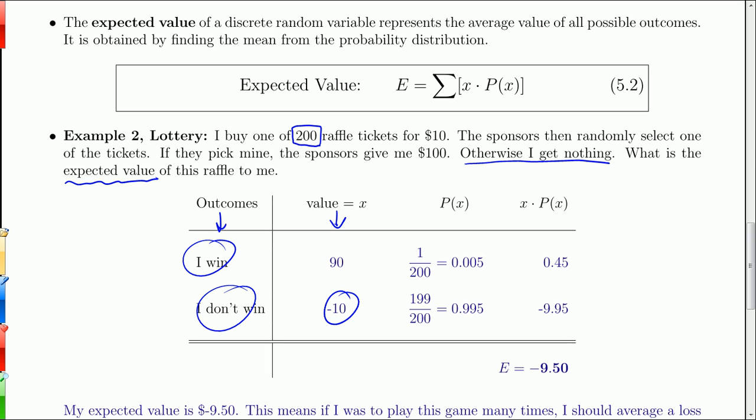If I win, that feels like a $90 plus. If I lose, it feels like a $10 negative. Then I take the probabilities. The probability that I win, there's only one prize selected, so it's one out of 200. The probability I don't win is 199 out of 200. These probabilities have to add up to one, which they do.